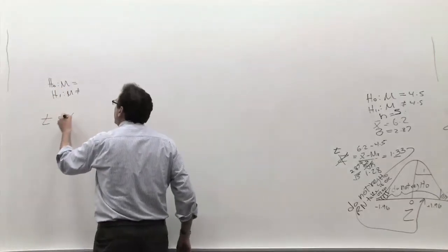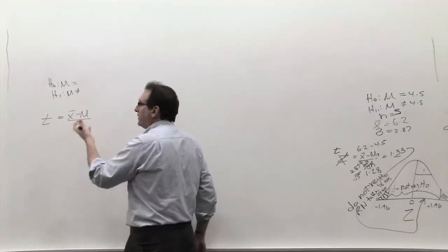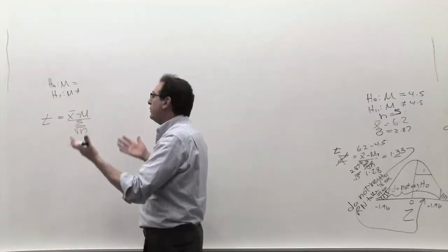Step number two, you plug your number into this formula, X minus mu over S over the square root of N. At this point, not just something you just memorize, but something you really understand.